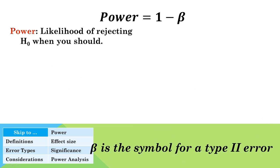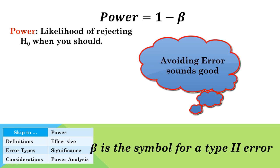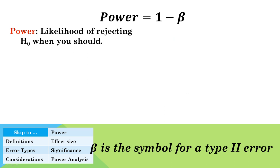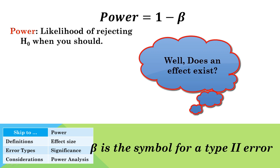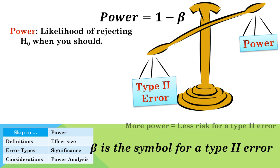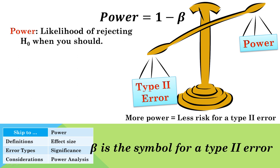Power is the probability that the researcher will make a correct decision to reject the null hypothesis when it is in reality false, therefore avoiding a type 2 error. It refers to the probability that your test will find a statistically significant difference when such a difference actually exists — in other words, the ability of a test to detect an effect if the effect really exists. The more power a study has, the lower the risk of a type 2 error. If power is low, the risk of a type 2 error is high.